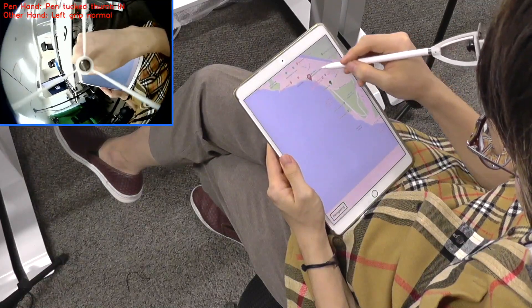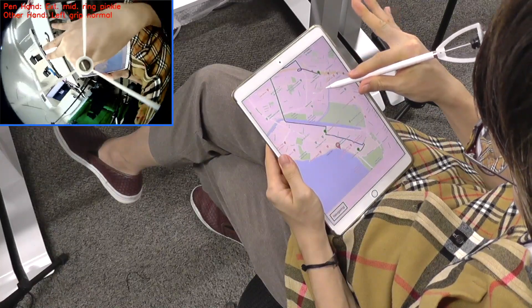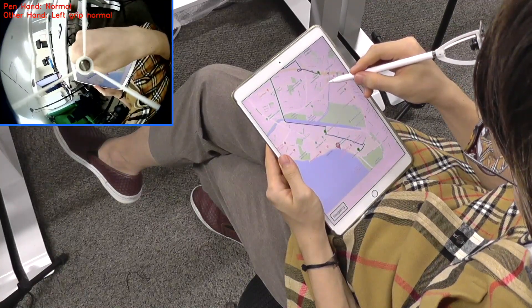As with the desk scenario, postures of the other hand can be combined with actions triggered by the pen holding hand, such as changing the terrain type or executing route searches.